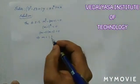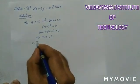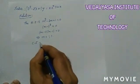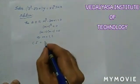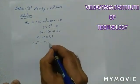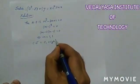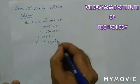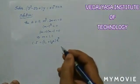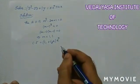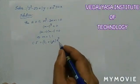Therefore, the complementary function CF = (c₁ + c₂x)·eˣ. This is the complementary function.